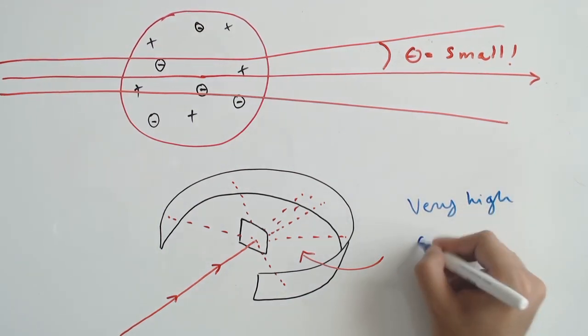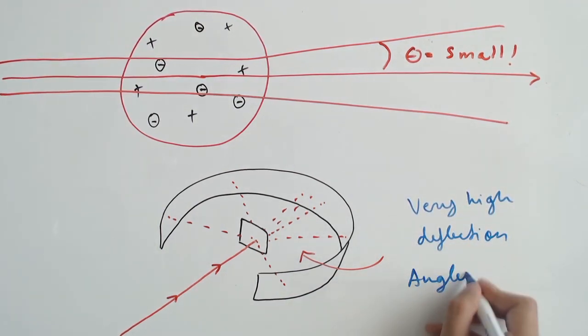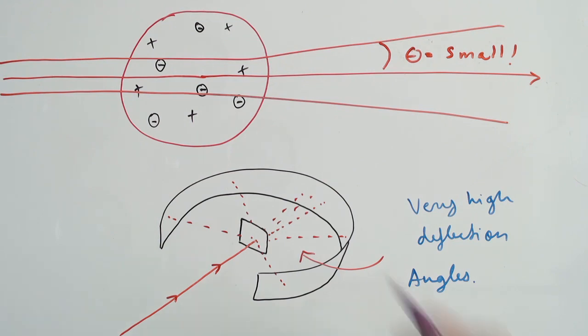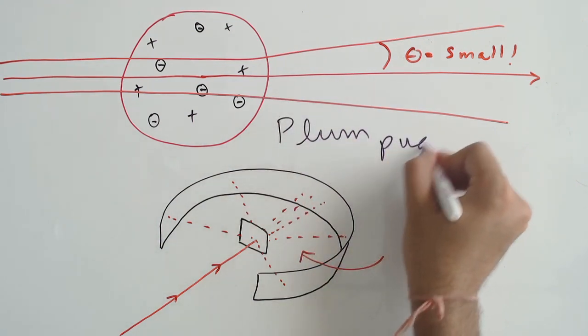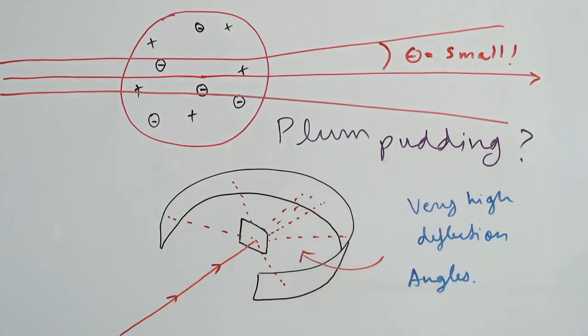At best, a plum pudding atom should scatter the alpha particles by a fraction of a degree. However, they noticed extremely strong deflections and even backscatters.